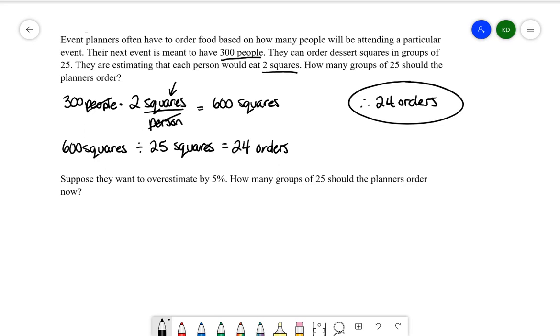For the next part, suppose they want to overestimate by 5%. How many groups of 25 should the planners order now? So a lot of the time, even though 300 people are going to an event, a lot of the time they'll overestimate just in case they have some other people show up that are unexpected. So let's say we have 300 people, and we want to overestimate by 5%. So we're going to multiply that by 1.05.